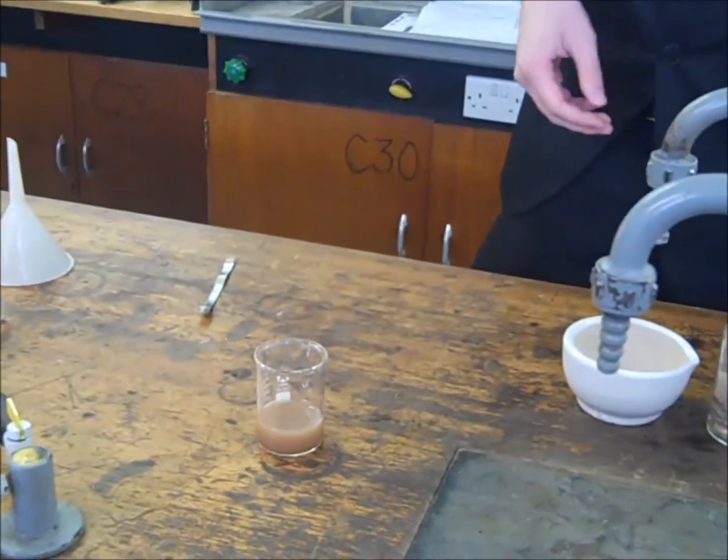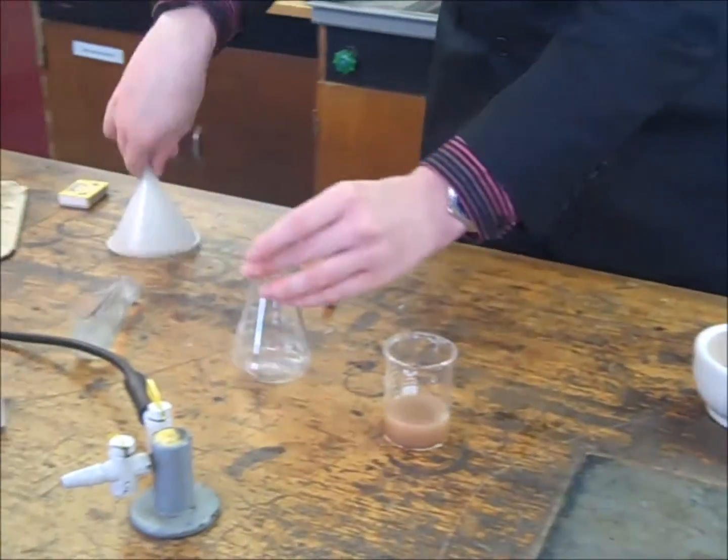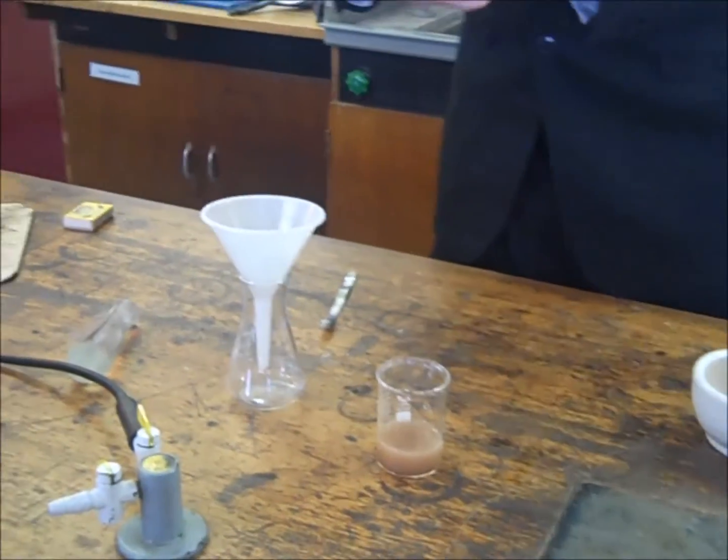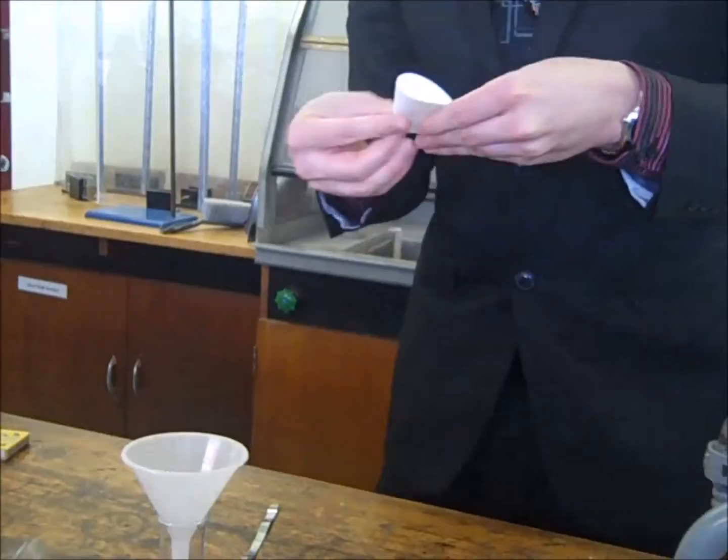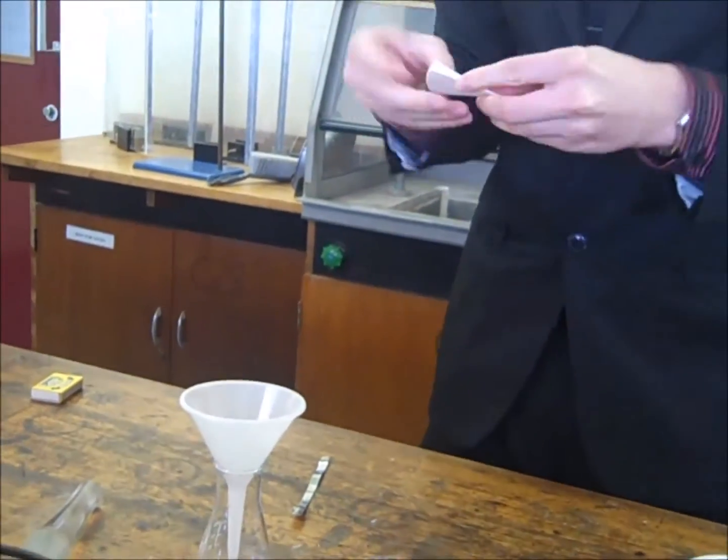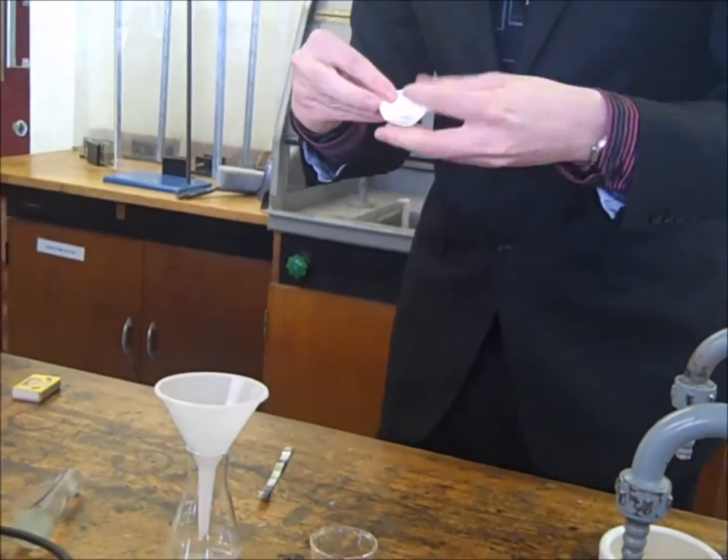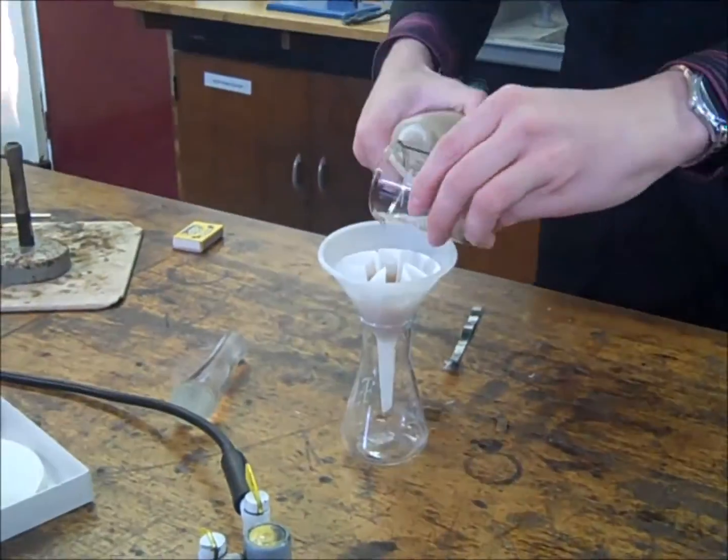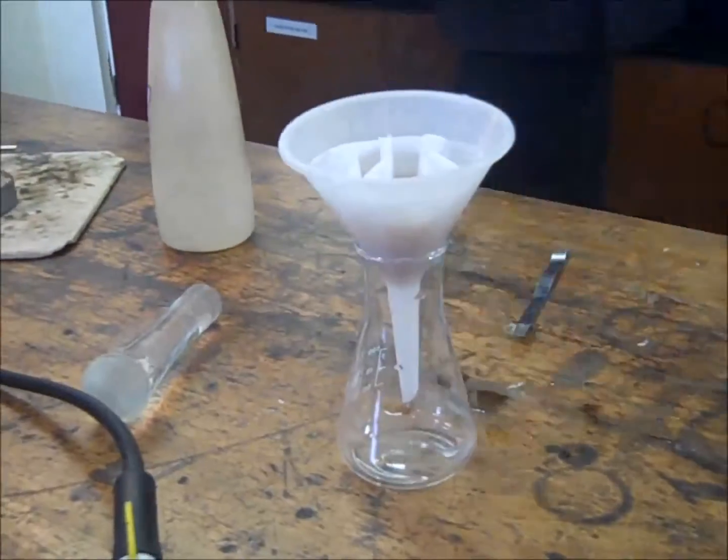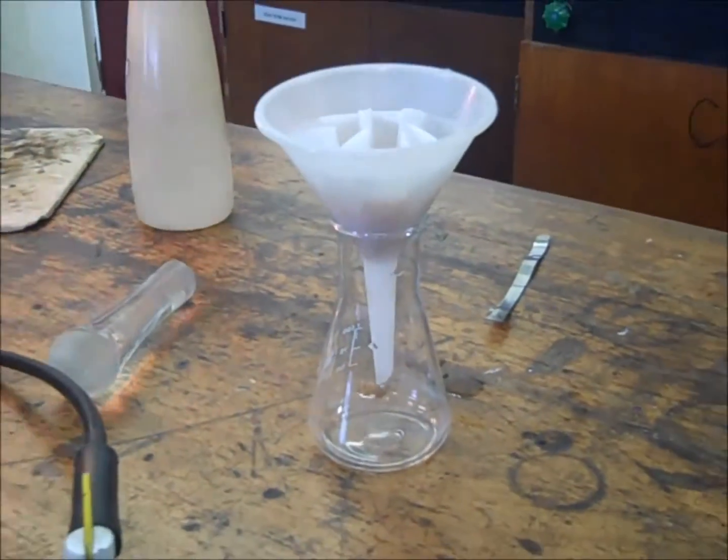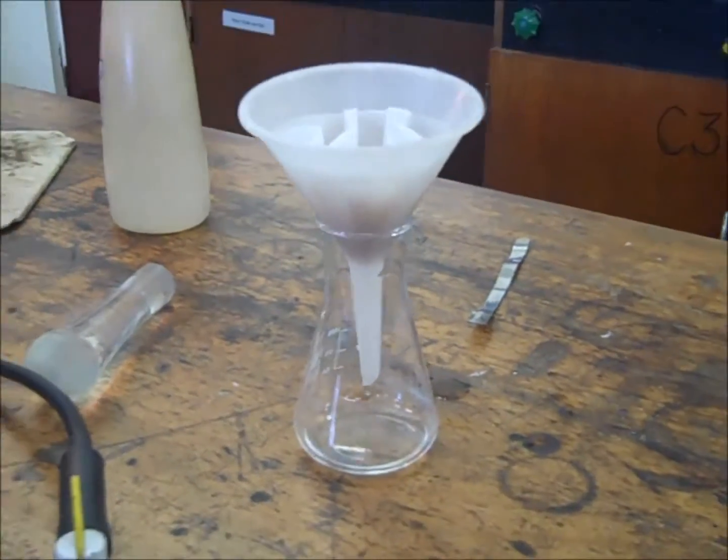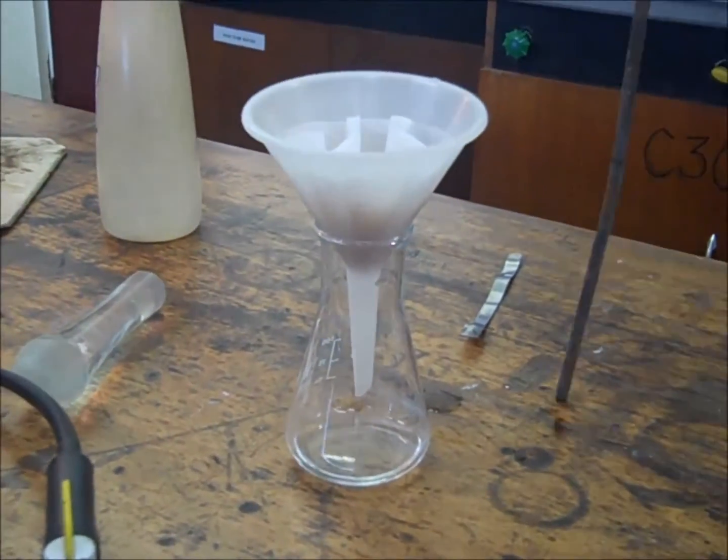Your next step once you've done that is to filter it through. So grab yourself your filter funnel and conical flask and then get yourself some filter paper and fold it like I've done here. This is something called the fluted filter technique but you don't need to know that for the exam. Once you've got that in place, add in your solution and filter it through and leave that to filter. If you've done it well enough, you should have a completely colourless solution down at the bottom and then bits of impurity left in the filter paper at the top.